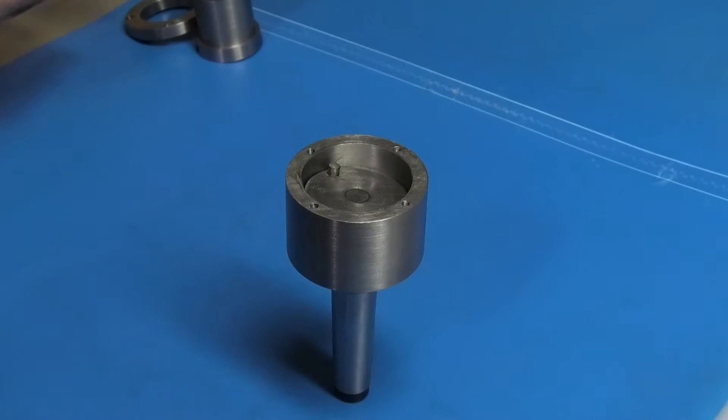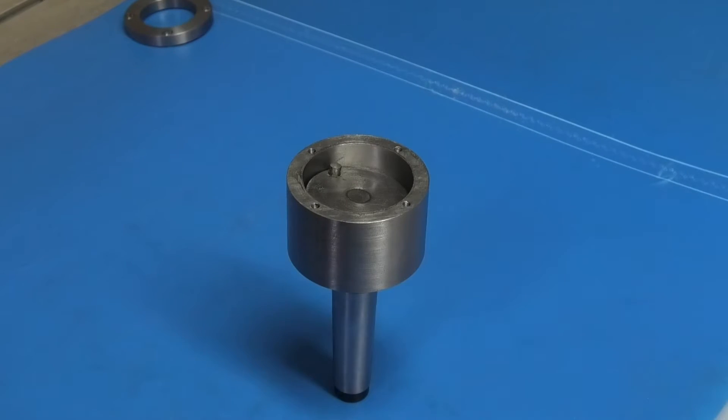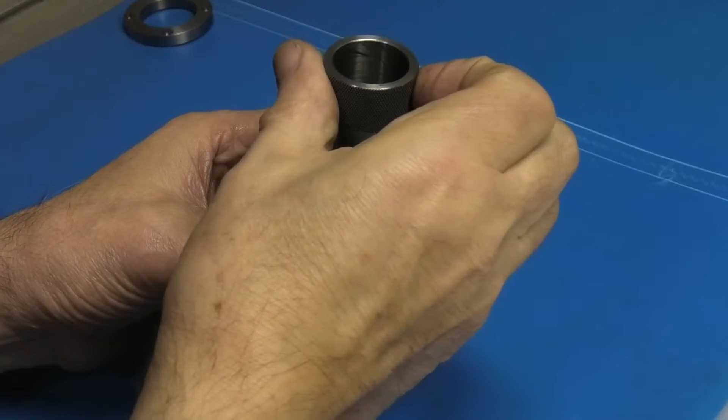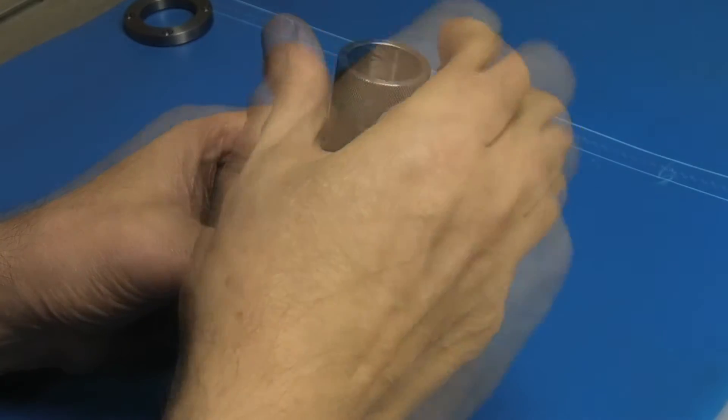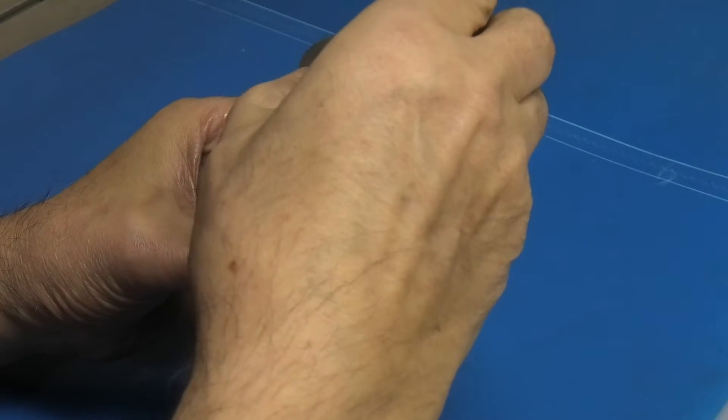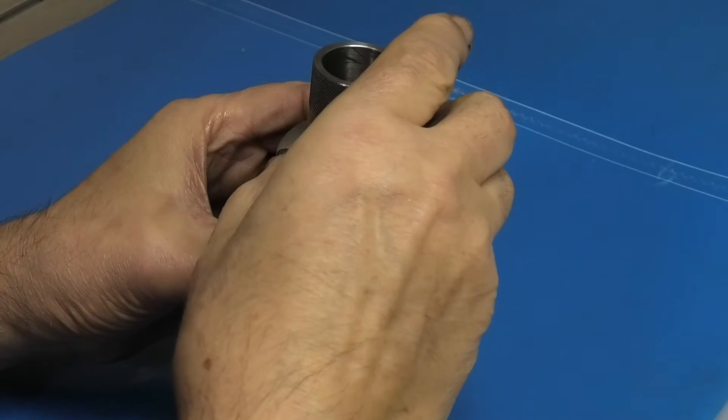On top of the plate goes the pivot sleeve with some grease on it, and that goes on the top. And to hold it all together, we fit the ring with the four cap heads in.